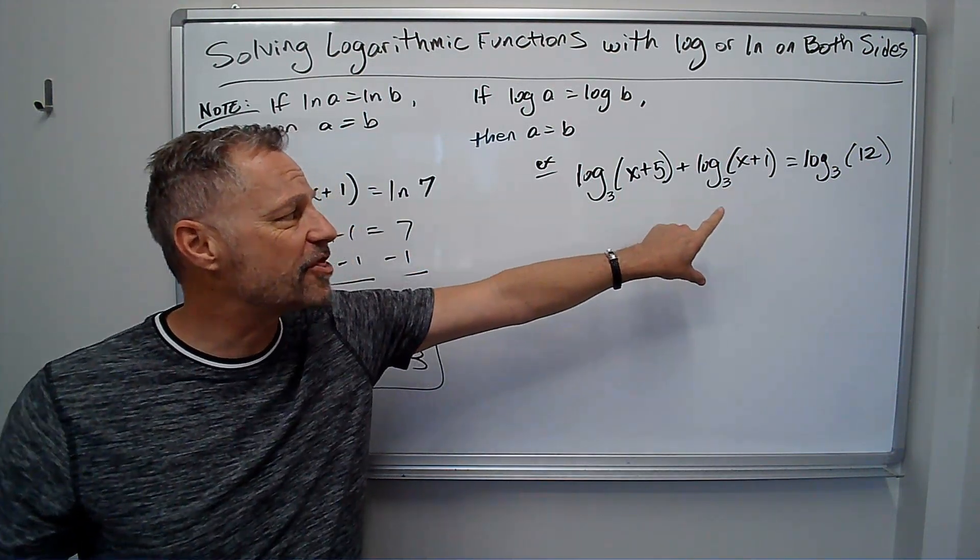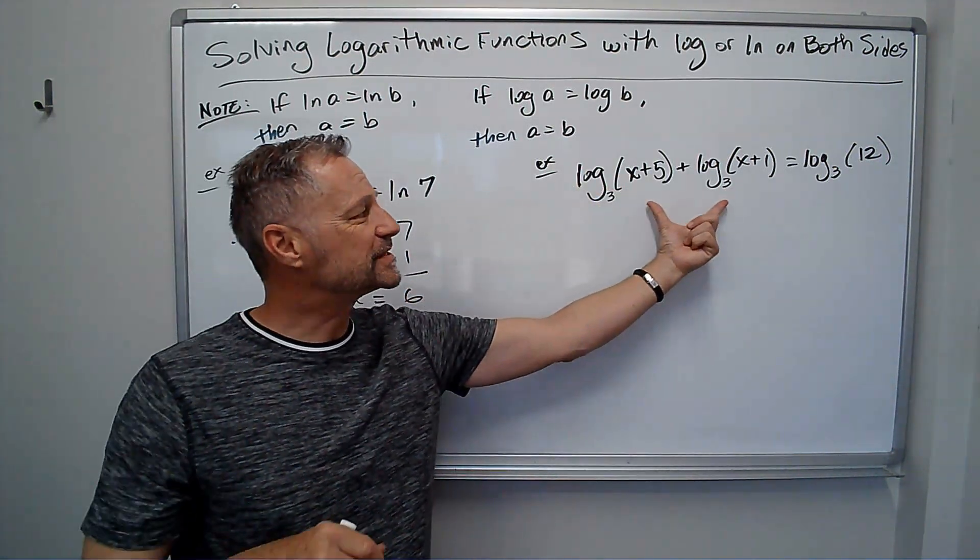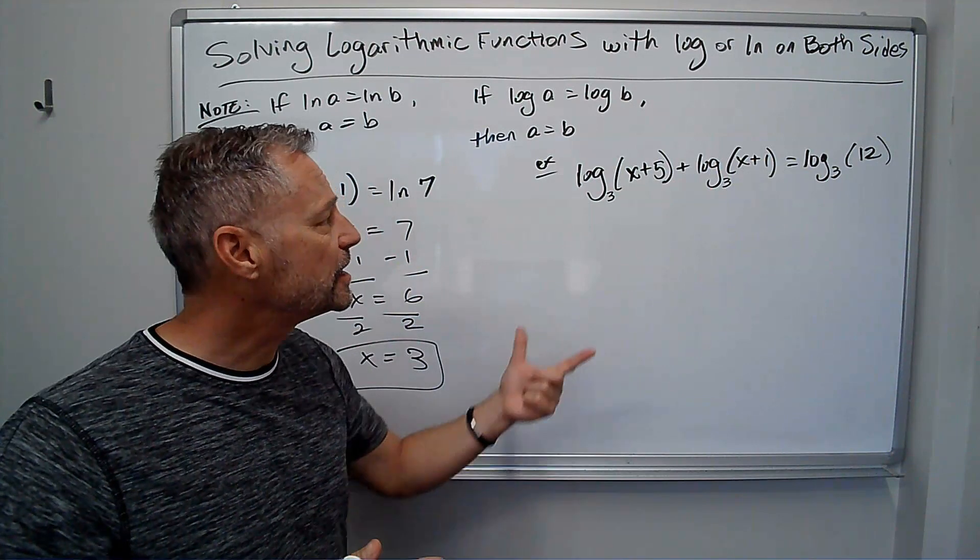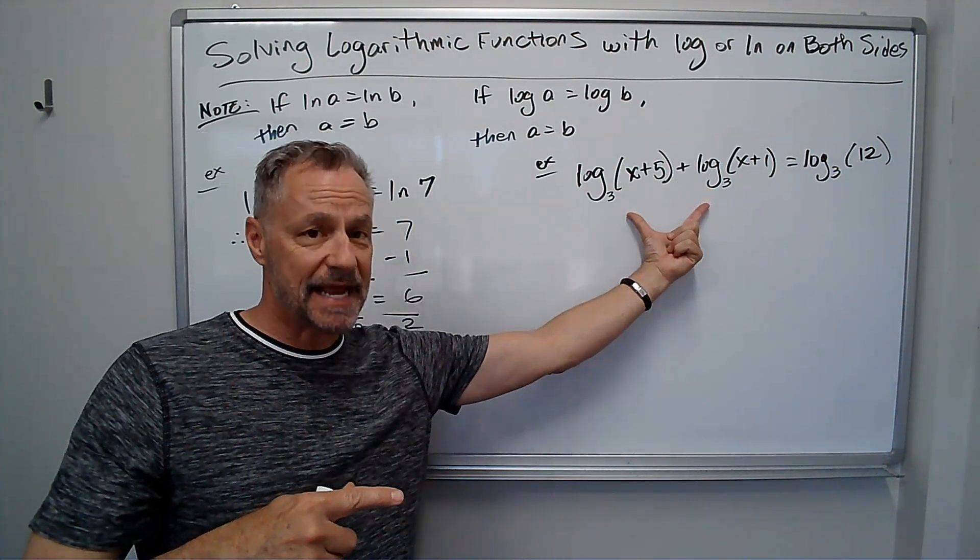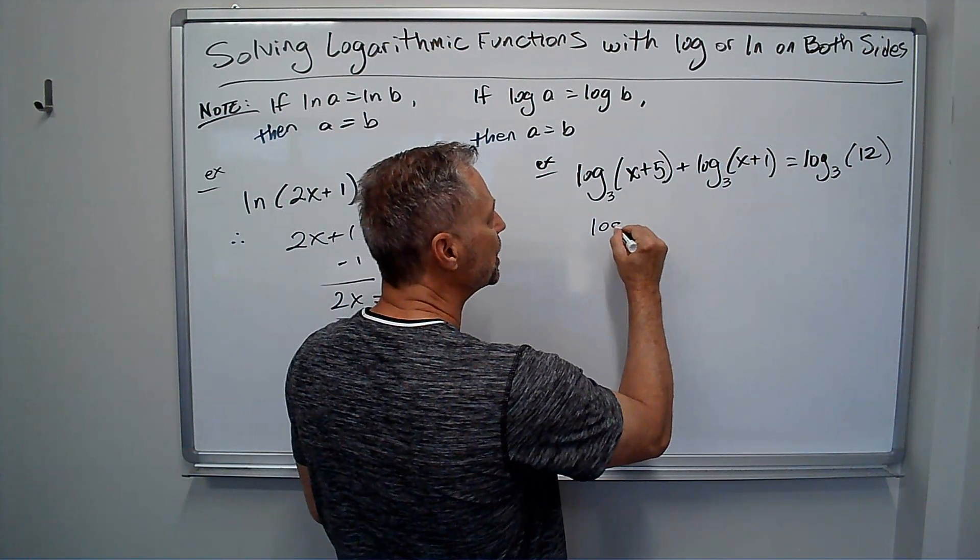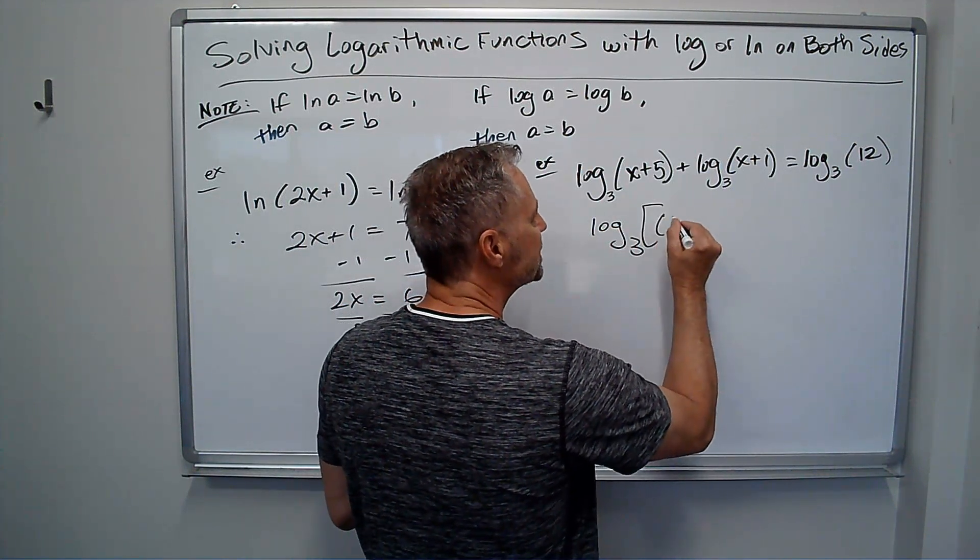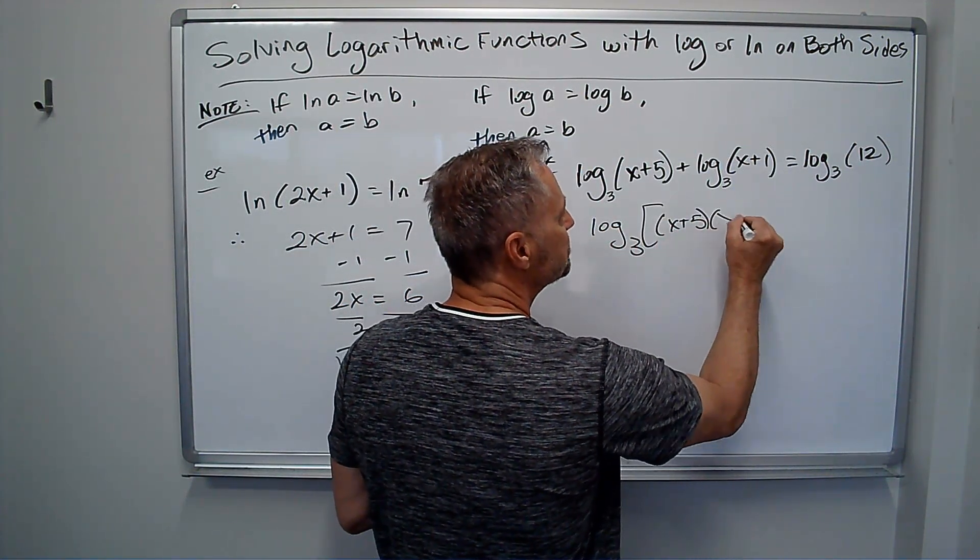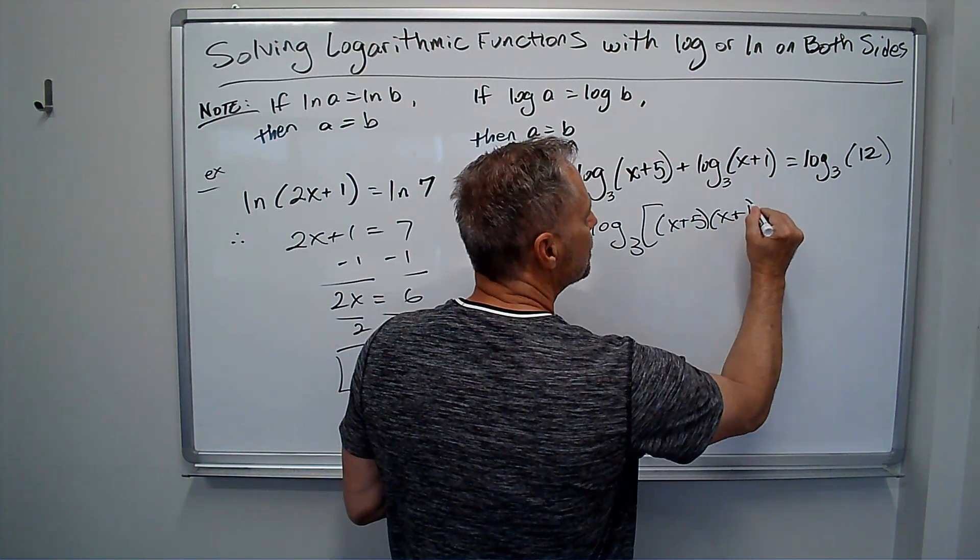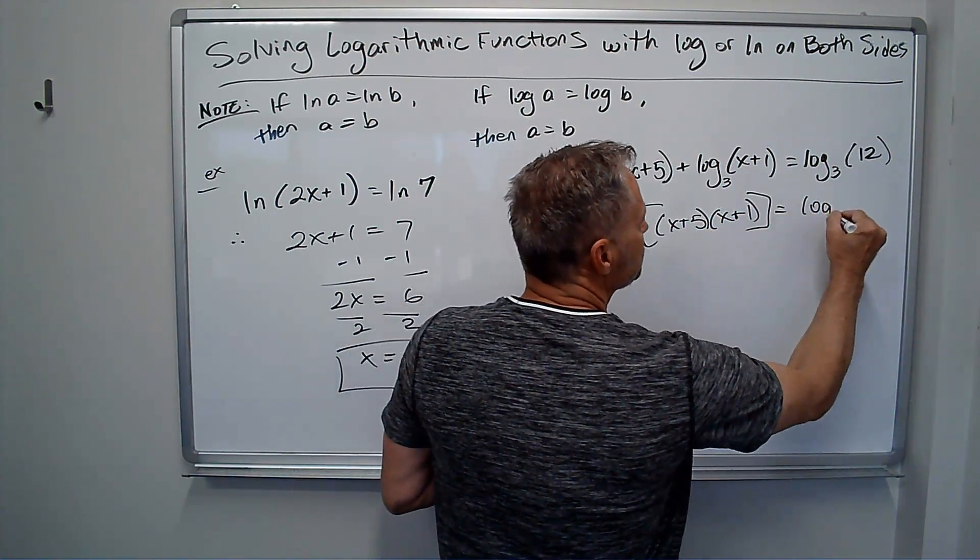Now let's look at this one. Now we're in base 3. The first thing I have to do is get the left side to be a single log. Remember, if I add two things with the same base, I could write it as a single log by multiplying the arguments together. So x plus 5 times x plus 1 equals log base 3 of 12.